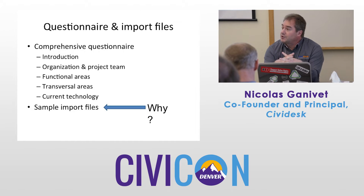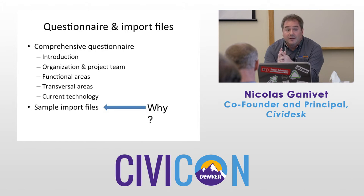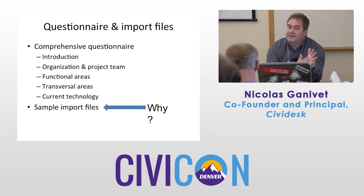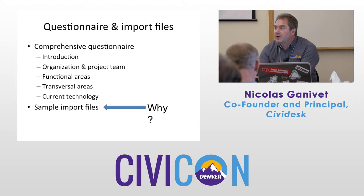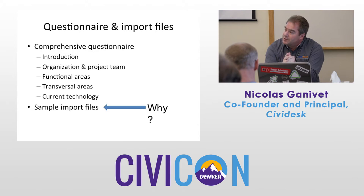Finally, we have a section on current technology because we always try to leverage their current systems as much as possible. If they're already using Constant Contact, for example, we won't tell them to switch to CiviMail. We'll keep Constant Contact and synchronize the CRM database with it. Over time they'll gain confidence in the CRM and may start doing some emails with CiviMail, then not need Constant Contact anymore. But we delay that decision — initially we integrate with what they already have to minimize disruption. And we ask them for sample import files, at least a sample of the data they want imported into the CRM.